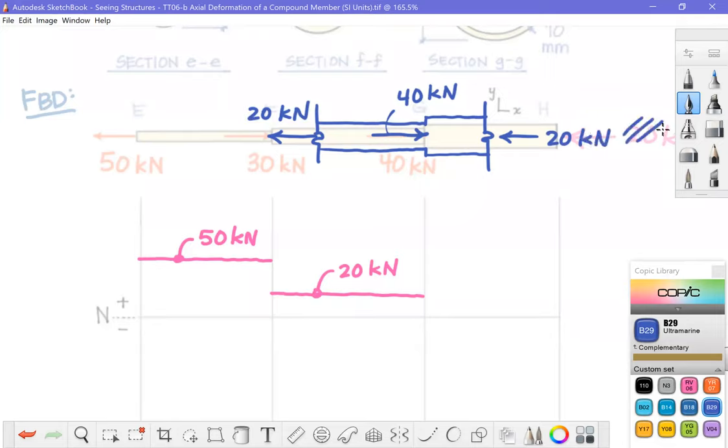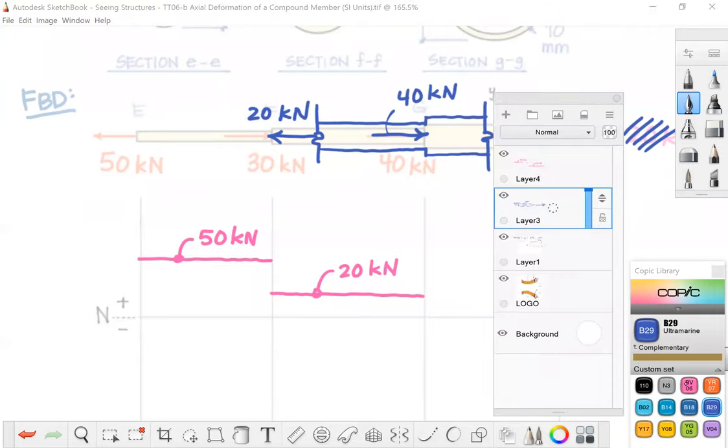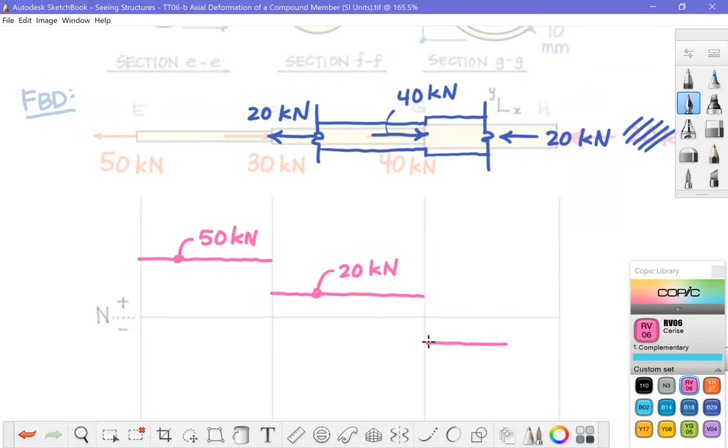In order to put this structure in equilibrium, I need a force of 20 kilonewtons pointing to the left. Note that this reaction doesn't show up in that free body, right? Because we cut it off, we cut it out. All right, so now 20 kilonewtons of compression in this final free body. We'll update my internal normal force diagram accordingly.